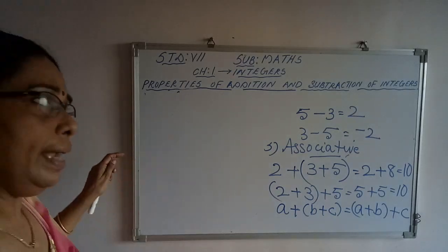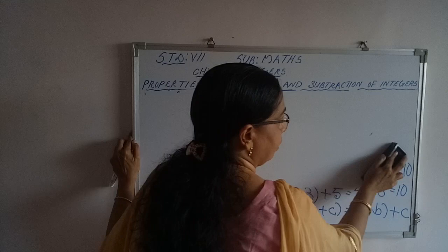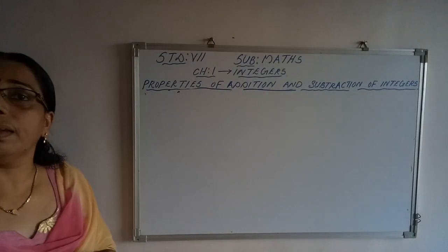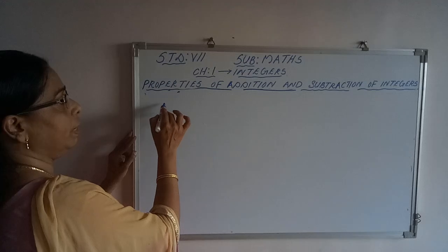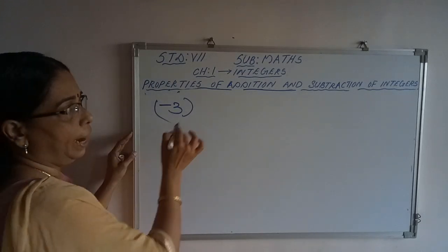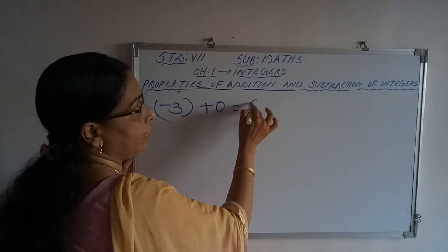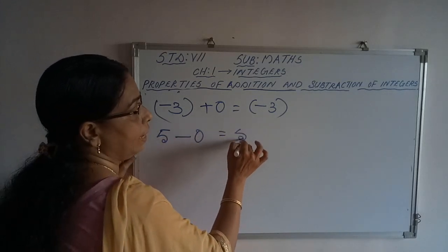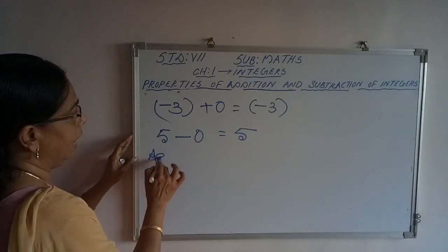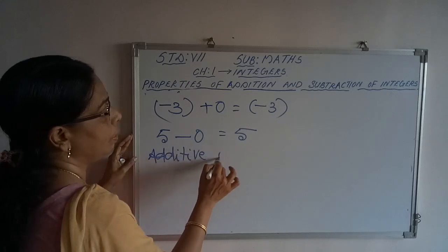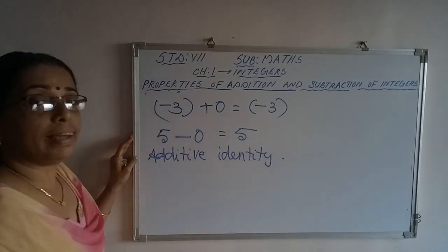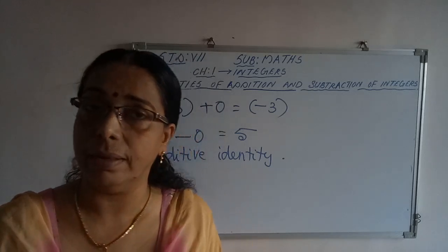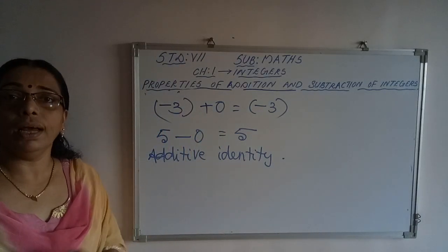We can see what is additive identity. In case of addition, if you add 0 to any integer, the answer remains the same — the integer will be the same. For example, minus 3 is an integer; if I add 0 to minus 3, we get minus 3 itself. Same way, if you subtract 0 from any integer, we get the same integer. This property is called additive identity. Zero is the additive identity: when you add 0 to any integer or subtract 0 from any integer, the answer will be the same integer.